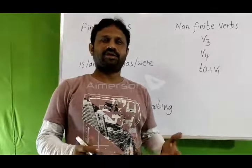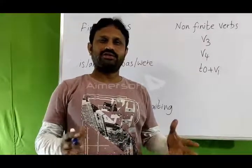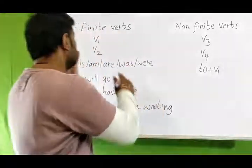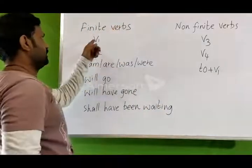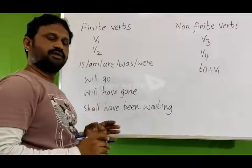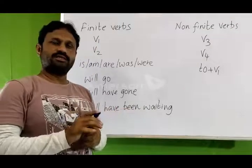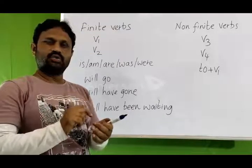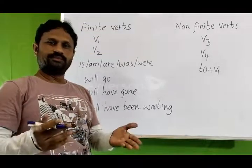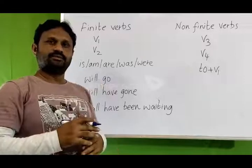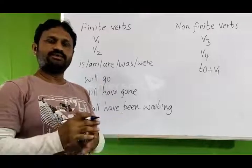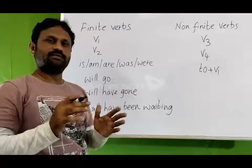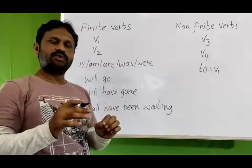Before going to practice a few examples, I would like to differentiate what is a finite verb and a non-finite verb. Finite verbs: V1 forms — all the V1 forms are finite verbs. These are write, sleep, think, do, fly. These are all V1 forms — the first form of the verb. The first form of the verb is a finite verb, except in a special use.